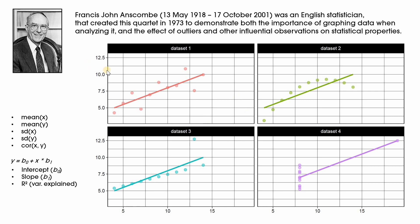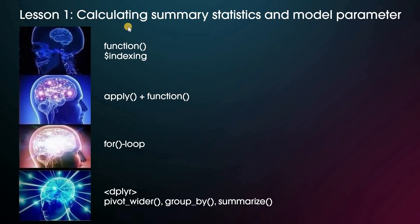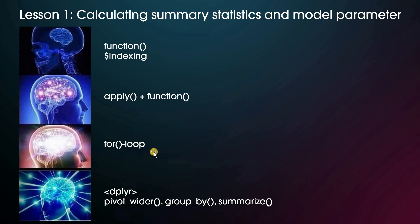The three lessons you can learn from this data set are: one, how to actually calculate the summary statistics and model parameters in R. I will show you different levels of skill and comprehension — starting with a basic way using indexing on the data frame and the actual function to calculate these different statistics. Then I show a first improvement using the apply functions, then it gets even more automated with a for loop. And in the end, I will show some helpful dplyr functions like pivot_wider, group_by, and summarize.